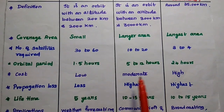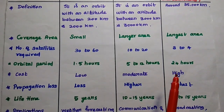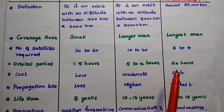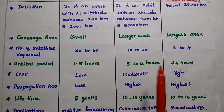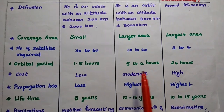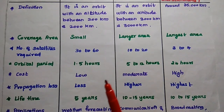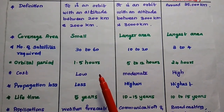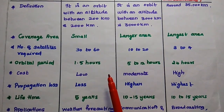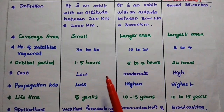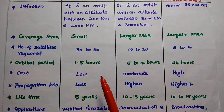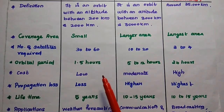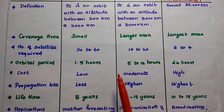GEO satellites are visible throughout the day. For MEO, visibility is 5 to 12 hours. For LEO, it is a very minimum amount of time — the visibility of a LEO satellite is only 1.5 hours.